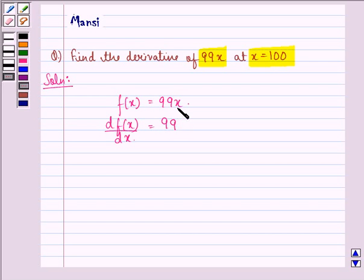Now derivative with respect to x of x is 1, because we know that derivative with respect to x of x raised to power n is equal to n into x raised to power n minus 1.